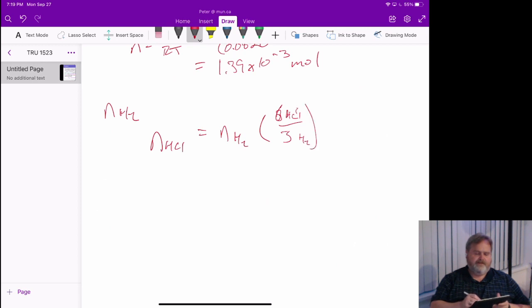So we're going to see it's twice the number of H2, which will be twice 1.39 times 10 to the minus 3 moles, which will be 2.78 times 10 to the minus 3 moles.